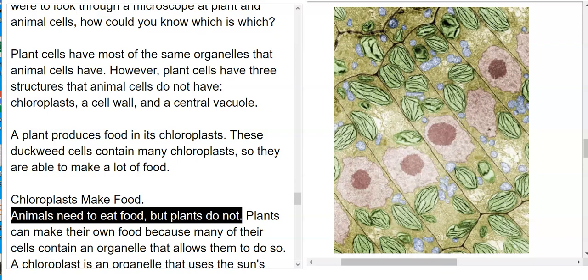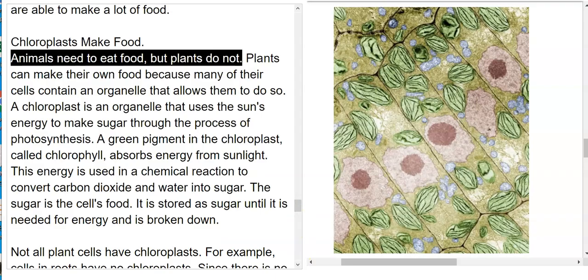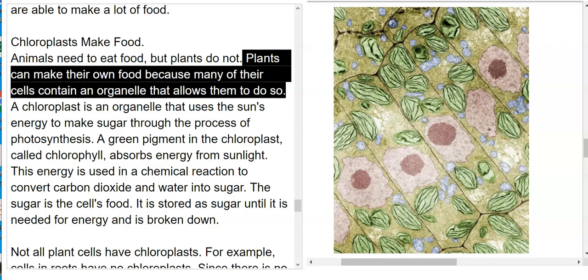Chloroplasts make food. Animals need to eat food, but plants do not. Plants can make their own food because many of their cells contain an organelle that allows them to do so.